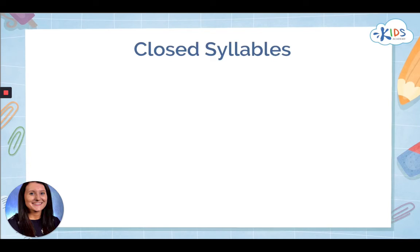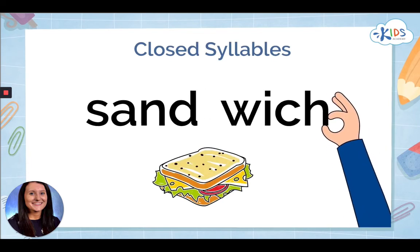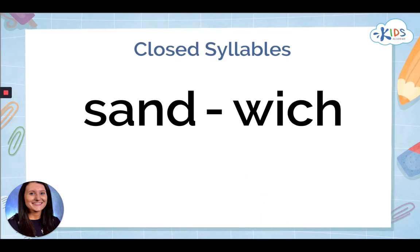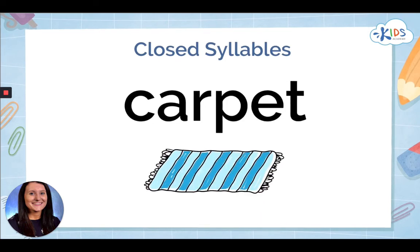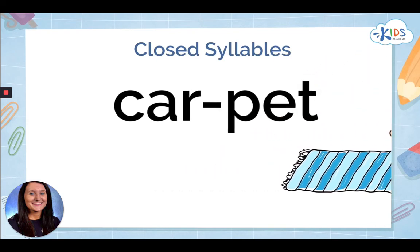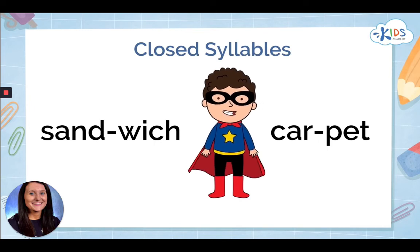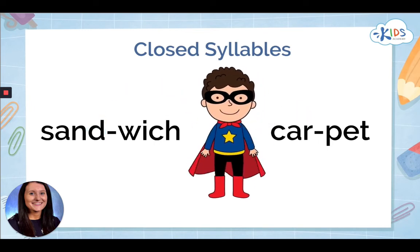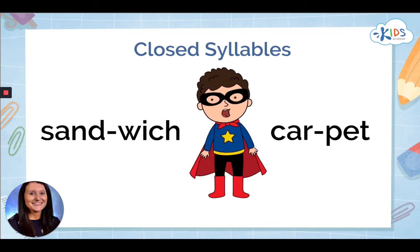Closed syllables end with a consonant — like sandwich and carpet. The first syllables in both of those words are closed because they end in a consonant. Closed syllables tend to have short vowel sounds.